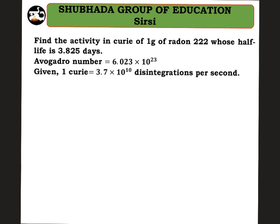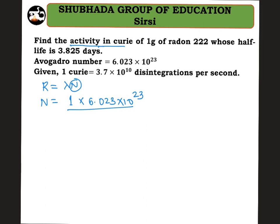We need to find the activity in curie. Activity R is equal to λN, where N is the number of atoms present in the given sample. N is equal to mass divided by atomic mass, multiplied by Avogadro's number. Mass is one gram, Avogadro's number is 6.023×10²³, divided by atomic mass number 222.